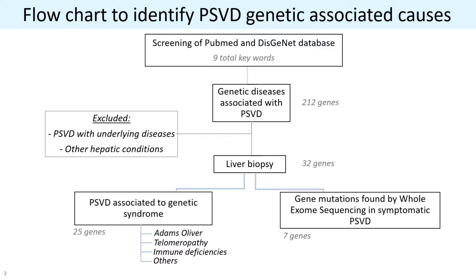To identify PSVD genetic-associated causes, we started with a screening in the public databases PubMed and DigitNet using different keywords, because PSVD nomenclature has been changing during the years. We found more than 200 genes associated with PSVD. From this group, we excluded case reports presenting patients with acquired PSVD with underlying diseases, and patients presenting hepatic conditions like hepatocarcinoma. We focused on those with liver biopsy description congruent with PSVD, and ended up with 32 genes split into different groups.